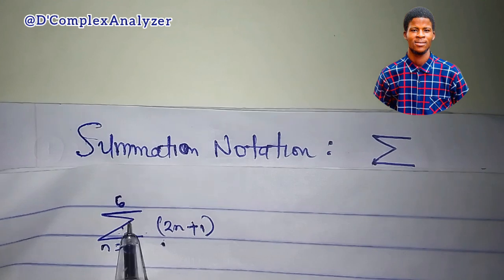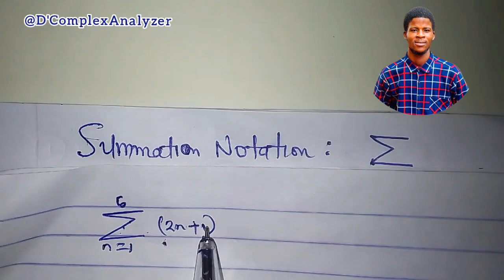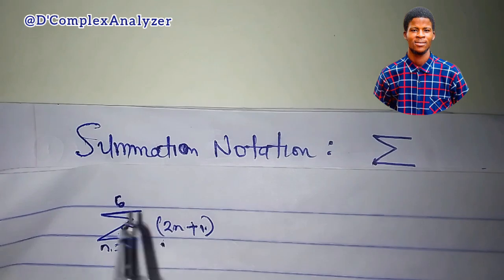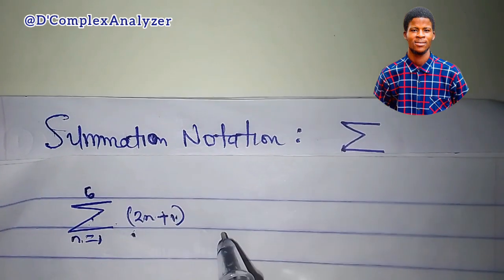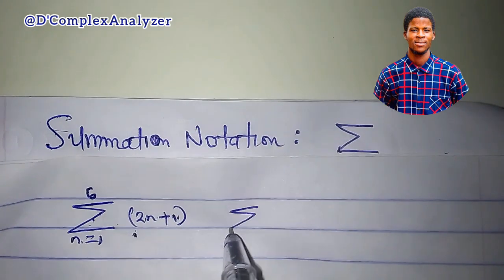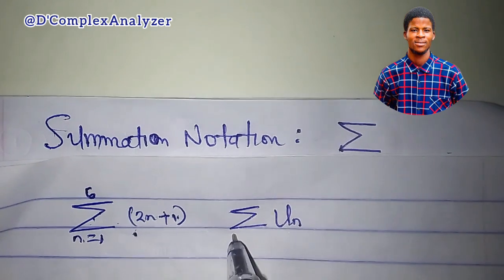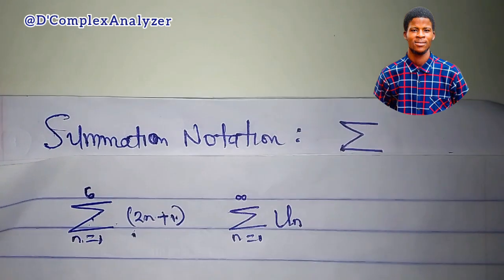This is the summation of the expression 2n plus 1, n start from 1 up to 6. It means that this is the summation of the expression u sub n, n equal to 1 up to, let's say, infinity.